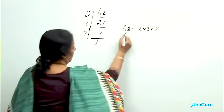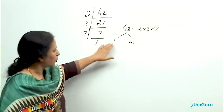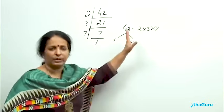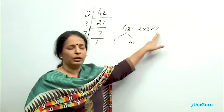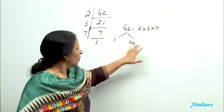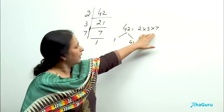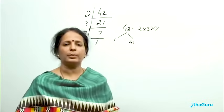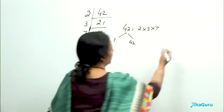42 has a factor 1 and 42 of course, no doubt about it. Every number has 1 as the factor and the number itself is the factor for its own. But apart from these 2, these 3 are also the factors of 42. In fact, 21 is also the factor of 42. But any number, composite number, can be written as the product of its prime factors. Can we take one more example?